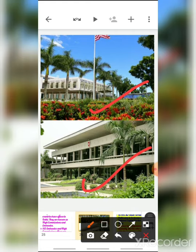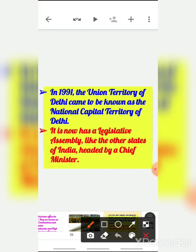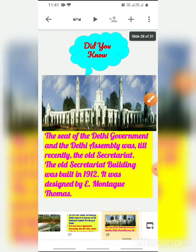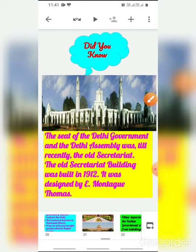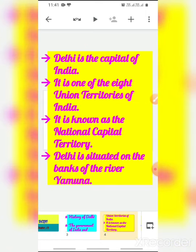In 1991, the union territory of Delhi came to be known as the National Capital Territory of Delhi. From then it has a legislative assembly like other states of India, headed by a Chief Minister. The seat of the Delhi government and the Delhi assembly was, until recently, the Old Secretariat — the Old Secretariat building was built in 1912 and was designed by E. Montague Thomas.